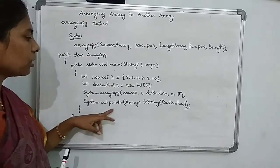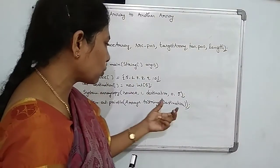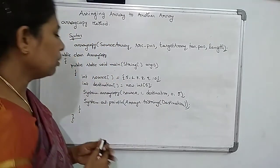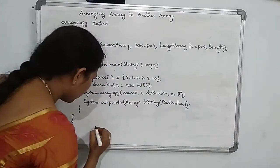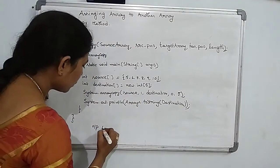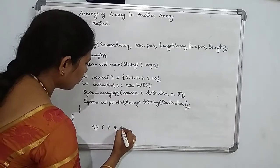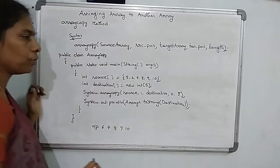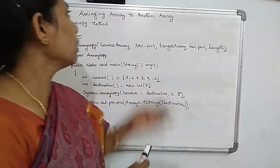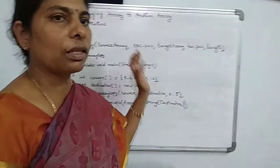Calling System.arraycopy(source, 1, destination, 0, 5) — starting from index 1 in the source, copying 5 elements into the destination starting at index 0. Then System.out.println(Arrays.toString(destination)) prints the destination values. The output is [6, 7, 8, 9, 10]. This is the process of assigning one array's elements to another array.